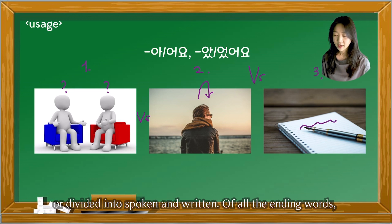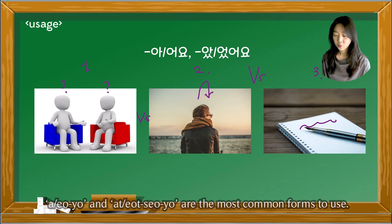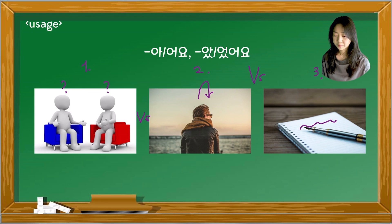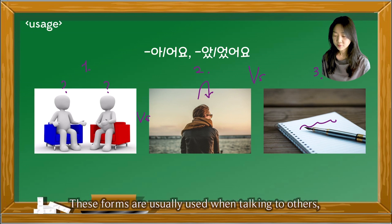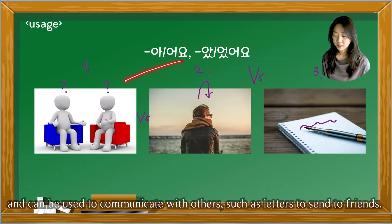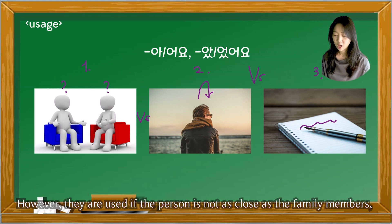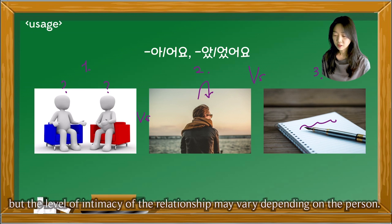Of all the ending words, 아어요 and 았었어요 are the most common forms to use. These forms are usually used when talking to others and can be used to communicate with others, such as letters to send to friends. However, they are used when the person is not as close as family members, though the level of intimacy may vary depending on the person.